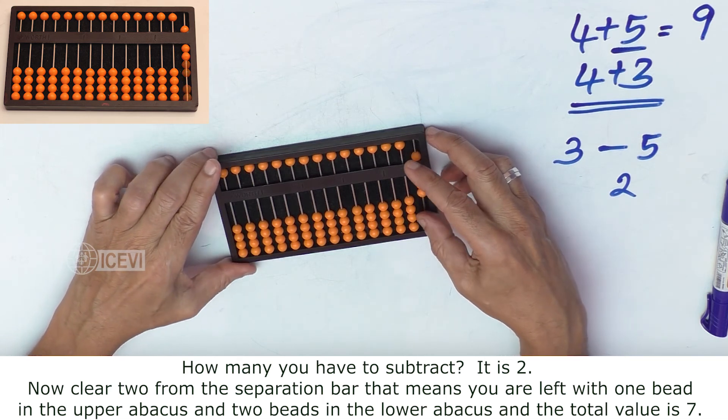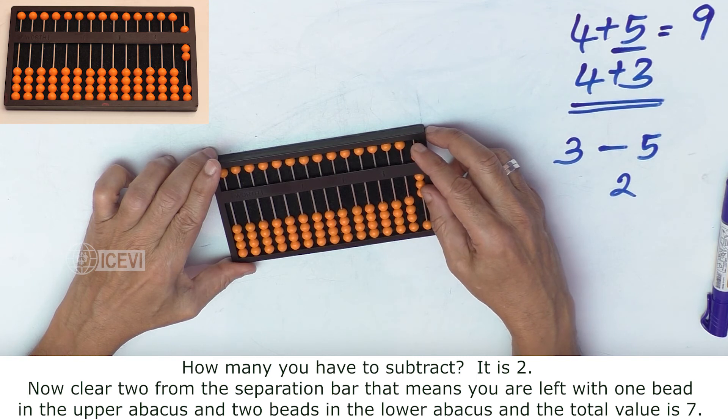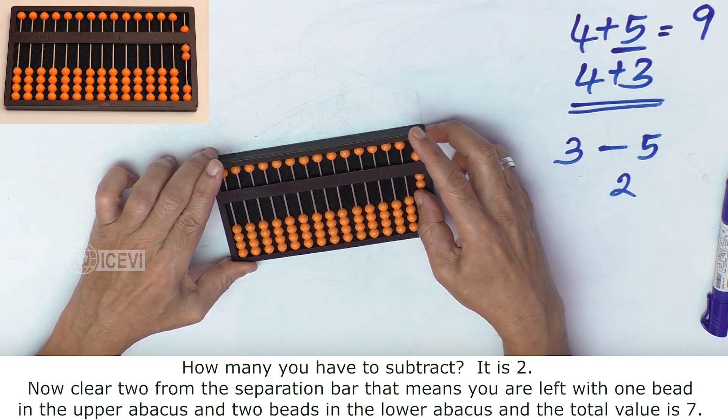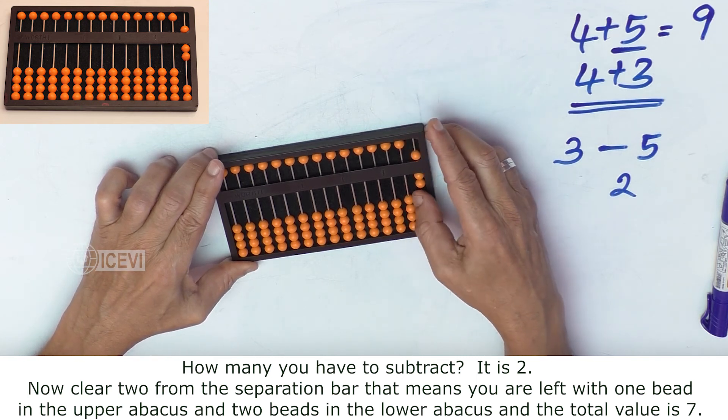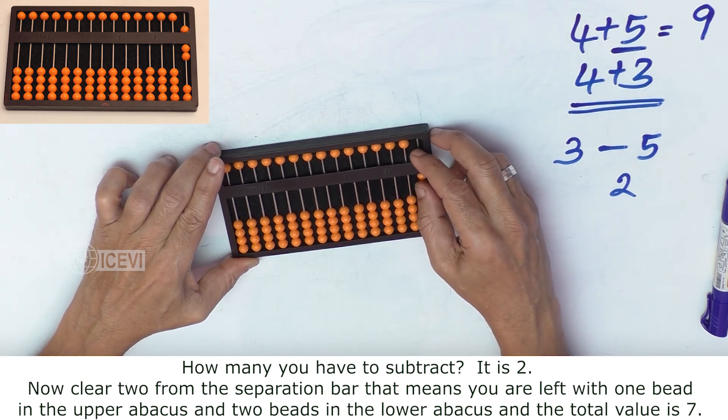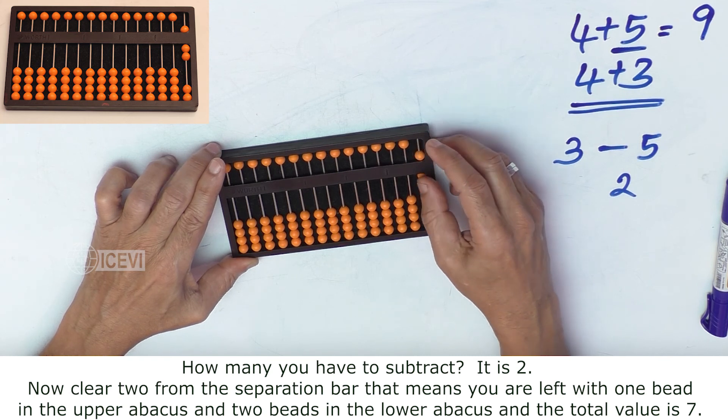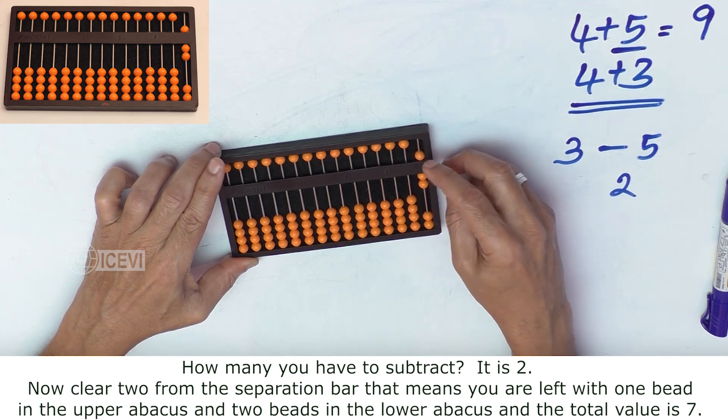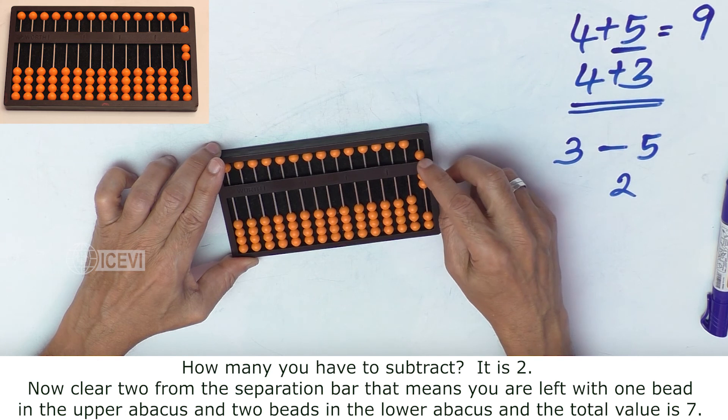Now clear 2 beads from the separation bar. That means you are left with 1 bead in the upper abacus and 2 beads in the lower abacus, and the total value is 7.